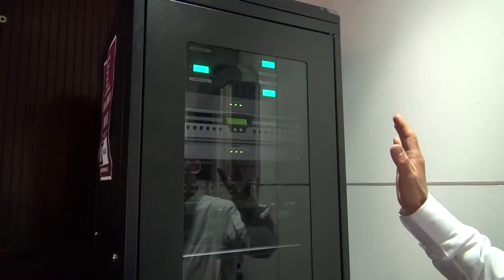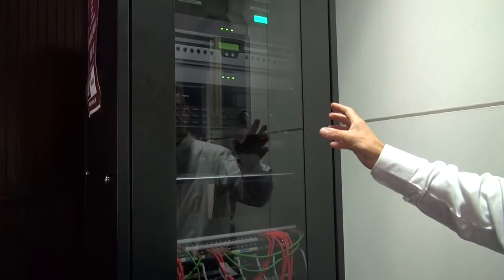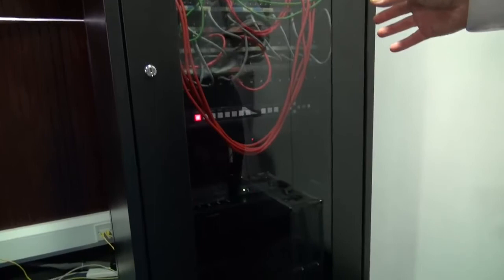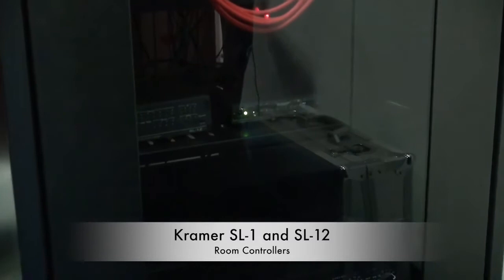Taking a closer look at the facilities in the rack from top to bottom we've got radio mic receivers, Allen & Heath audio mixing, amplifier, Blu-ray player, patch panels, another VP773 scaler switcher and the SL12 and SL1 controllers, which the two K-touch control panels in this room are negotiating and talking to to make the control of this room possible.